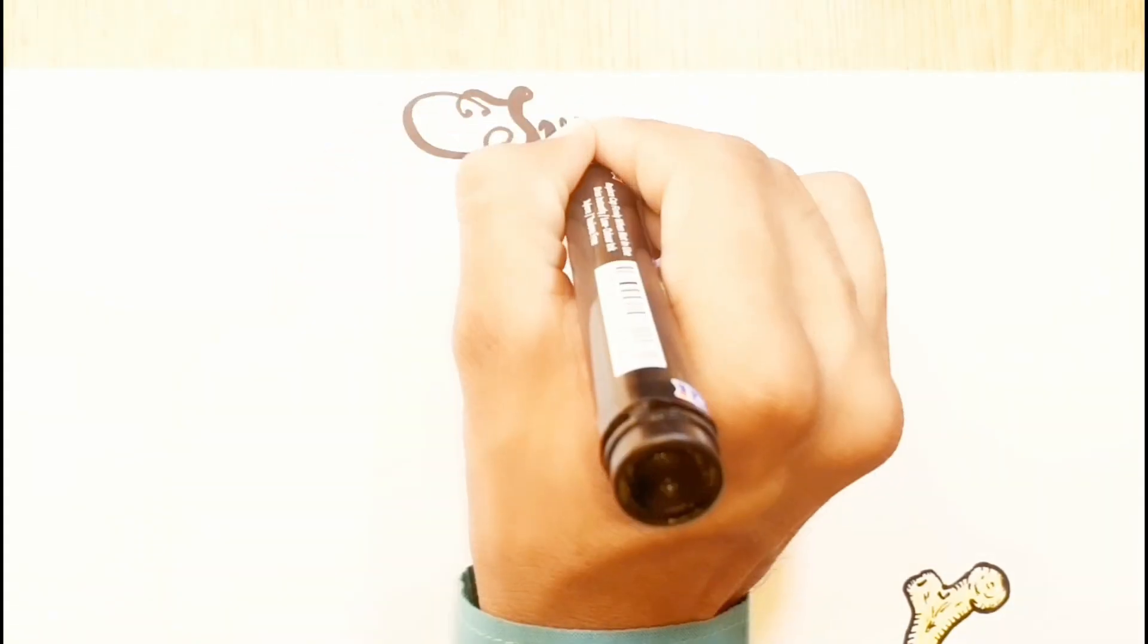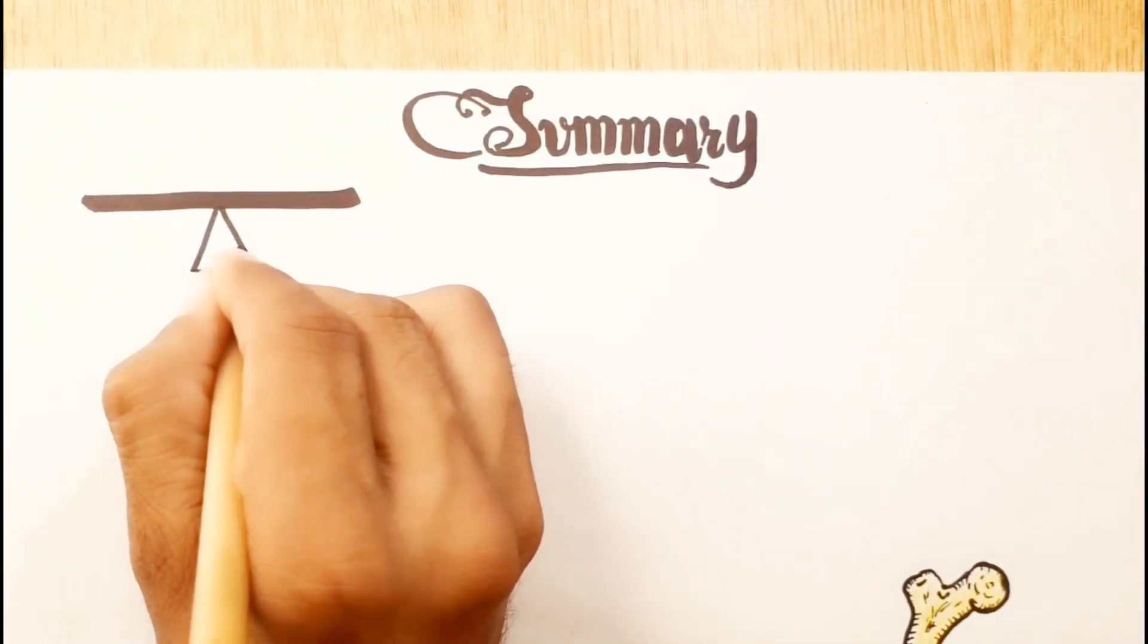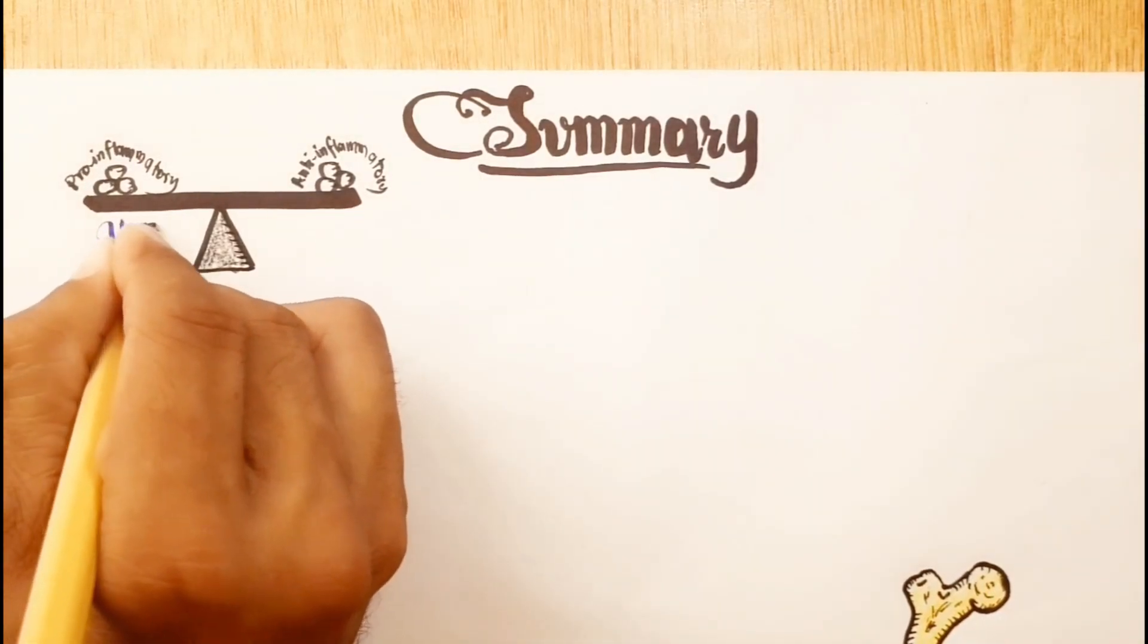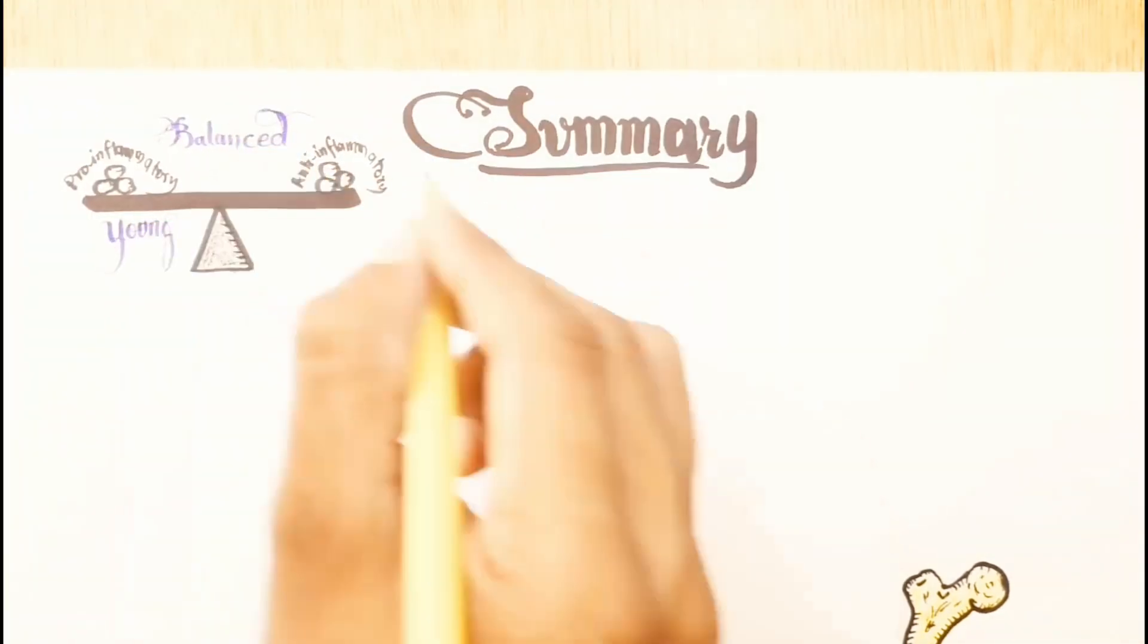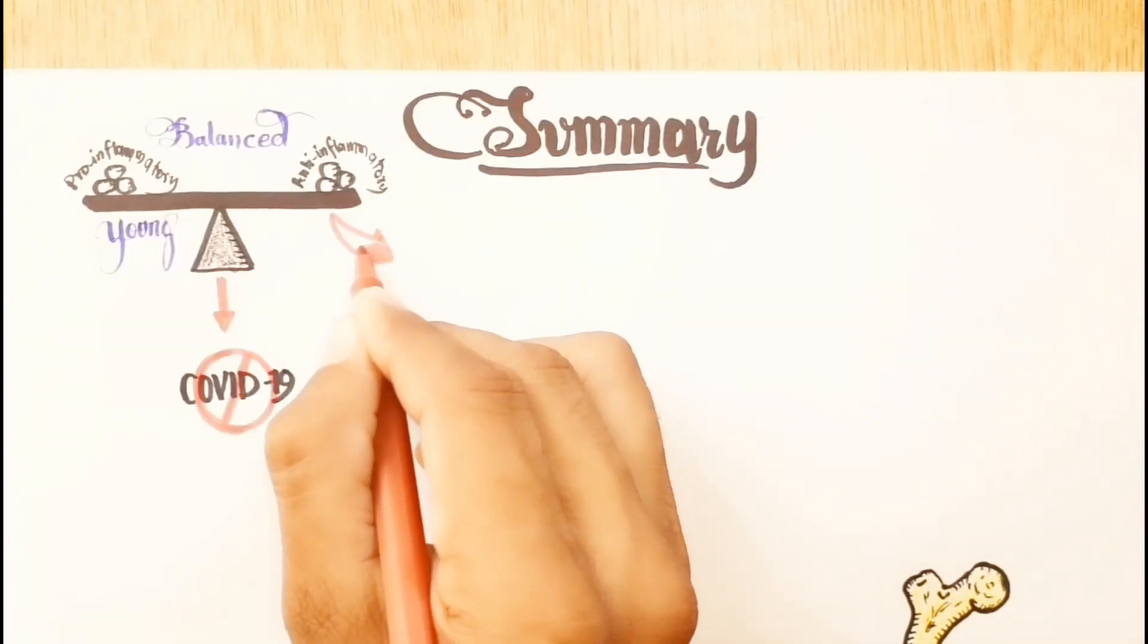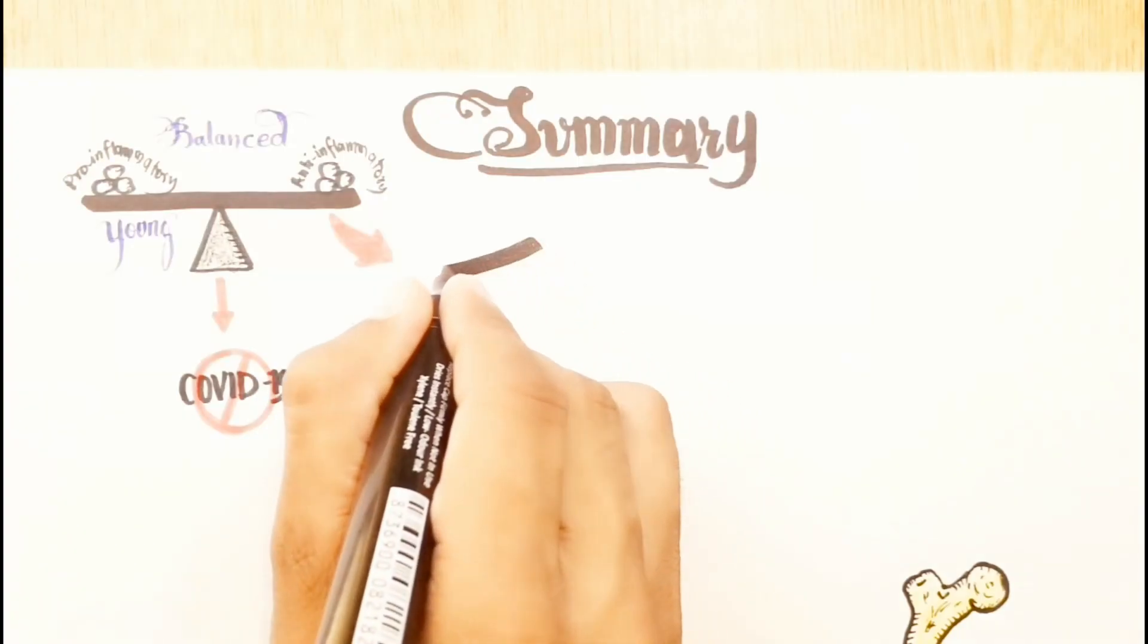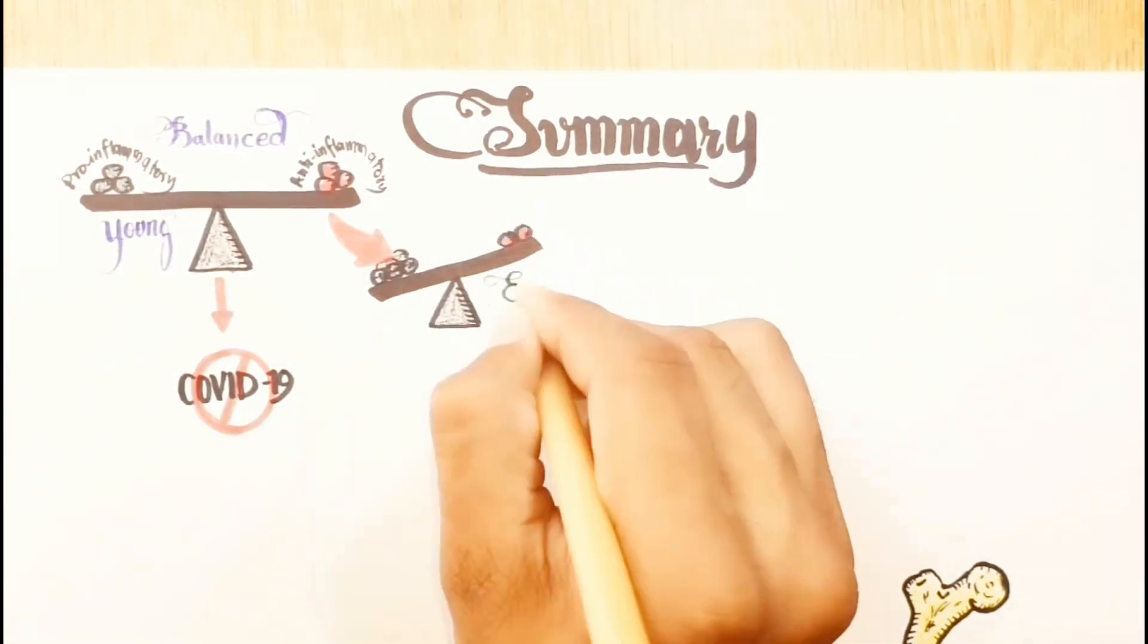In summary, it seems that young adults have a balance between pro-inflammatory and anti-inflammatory cytokine networks. Therefore, their balanced immune system can limit the progression of COVID-19 infection. However, elderly patients do not have the same balanced immune response as young adults.